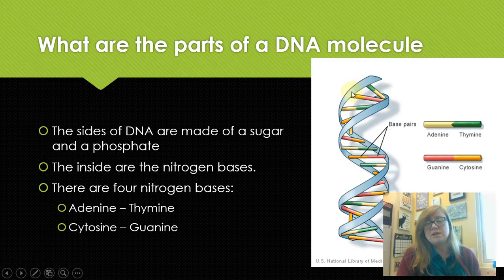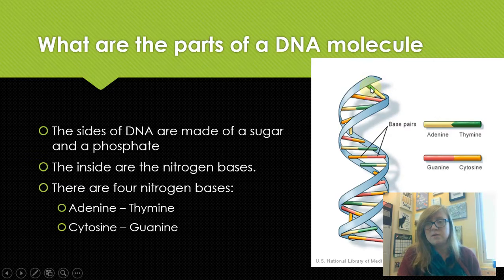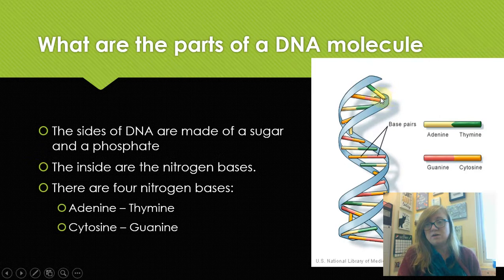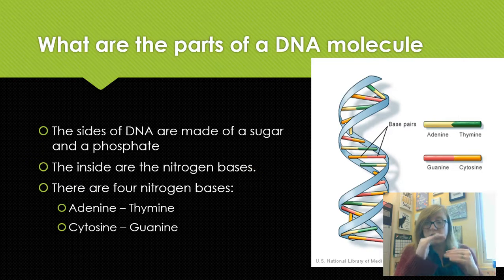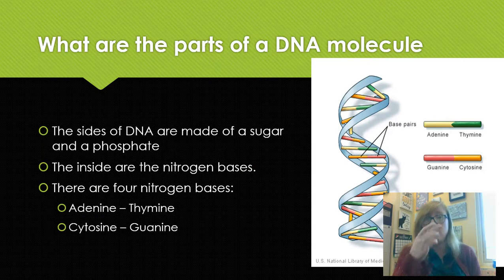The sugar and phosphate are the backbone part — the blue part here. The base is like the step of the ladder. So this base and this base, a T and an A — those are nitrogen bases. We have a nucleotide: sugar, phosphate, base. On the opposite side: sugar, phosphate, and a base — that's also a nucleotide. The rungs of the ladder are the nitrogen bases, and the order that those bases come in determines what you look like and who you are.